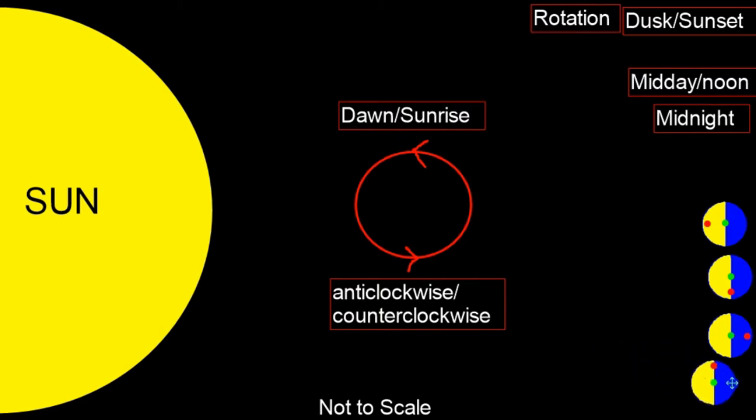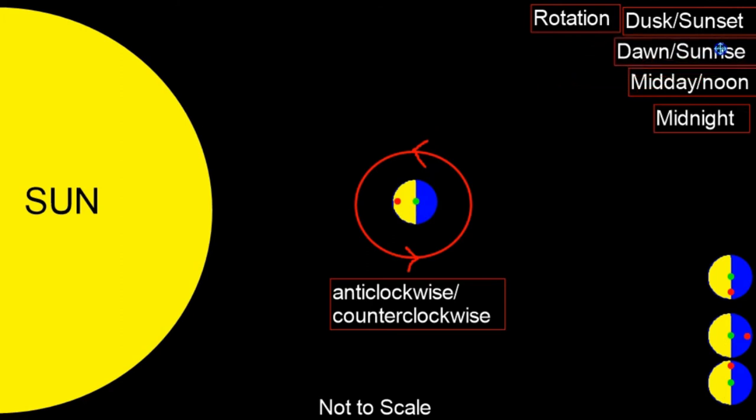And then to complete the 24-hour cycle we're right back where we started from here. We've got our little house there and we're right back to where we started from and that again is midday or noon. Now this whole trip, the rotation of the Earth which took our house all the way through dusk to midnight to dawn to midday, that takes 24 hours.